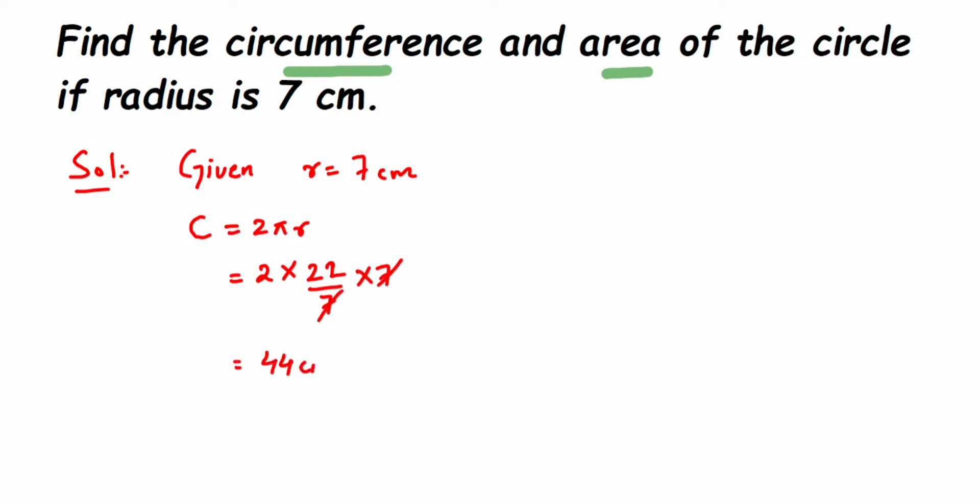We're going to find out the area, so area is equal to πr². Again, pi value is 22 upon 7. It's r square, so 7 square. Again I'm going to open this - 22 upon 7 into, so 7 square is 7 into 7. I'm going to cancel one 7.